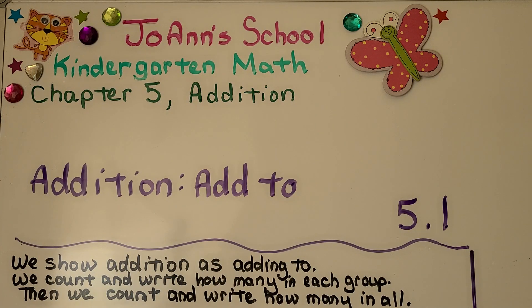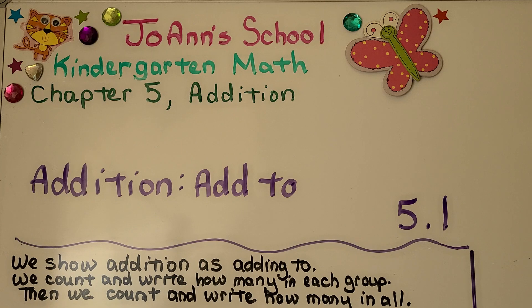We're in a new chapter, chapter five about addition. This is lesson 5.1. We're going to add to. We show addition as adding to and we count and write how many in each group, then we count and write how many in all.